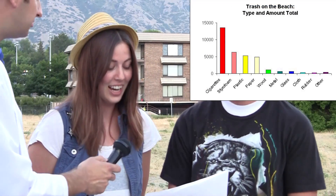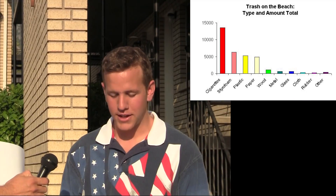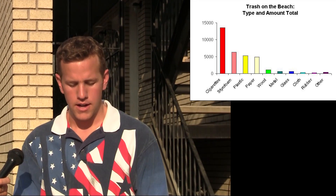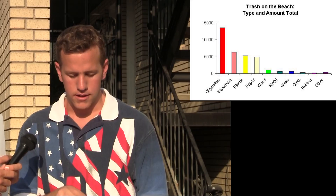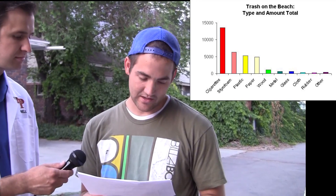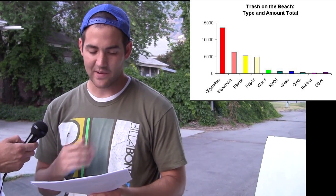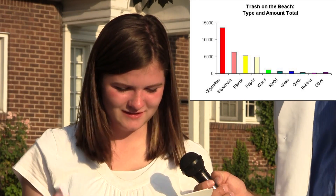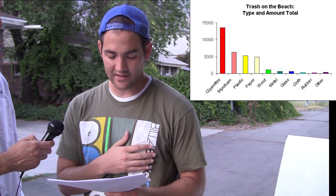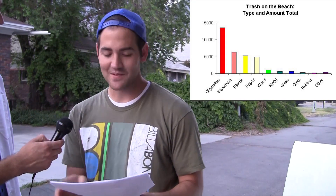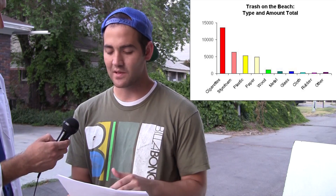What kind of graph is this? Bar graph. It's talking about the trash on the beach — a random beach — and the type and the total amount. On the side it talks about the amount of trash and what trash it is. So this is showing the trash on the beach, the different types, and about how much there is. Which has the most trash? Cigarettes. How can you tell? It has the largest bar. So the most common type of trash on the beach is cigarettes, followed by styrofoam, then plastic and paper, then wood, then metal, then glass and cloth, then rubber, then other.